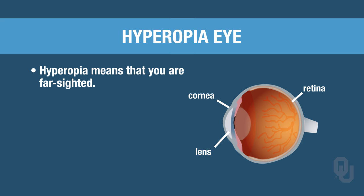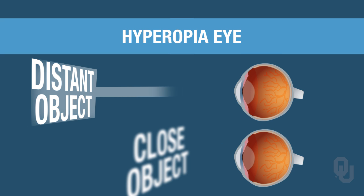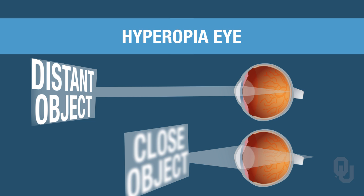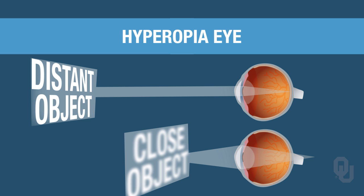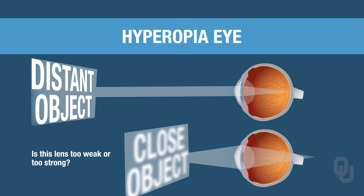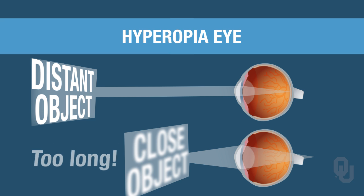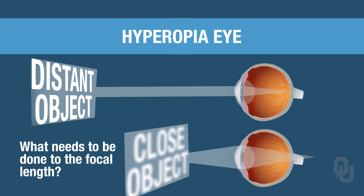In hyperopia, or farsightedness, you have no difficulty seeing objects that are far away, but you have difficulty seeing objects that are nearby. Looking at the two diagrams: with a distant object, light rays converge onto the retina — perfect vision. But when looking at a nearby object, the focal point falls behind the retina. The reason is that the lens is too weak — not enough refraction. So your focal length is too long, and we need to shorten it.